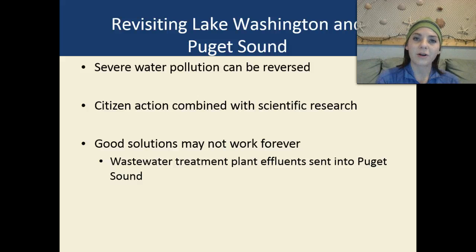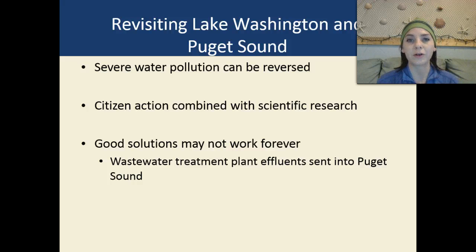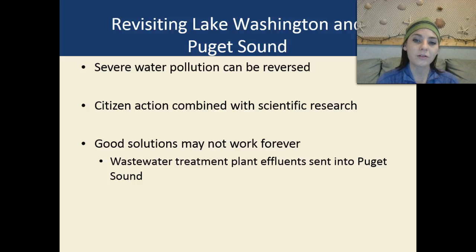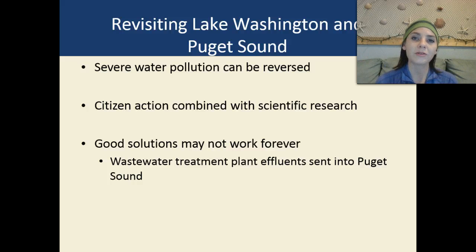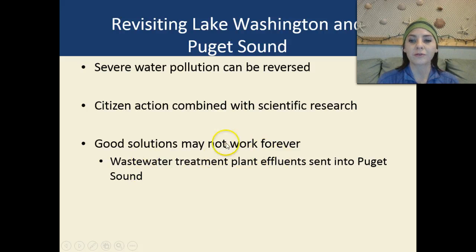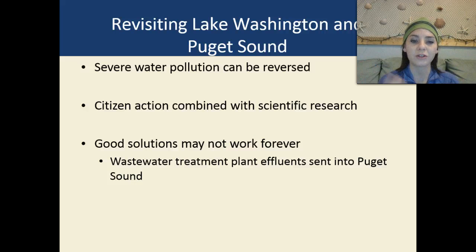Going back to our case study of Lake Washington and Puget Sound — we had severe water pollution, and we did realize it could be reversed. Citizen action combined with scientific research helped decrease pollution in that lake. However, good solutions don't always work forever, as different pollutants keep coming in and require new solutions. Wastewater treatment plant effluents — including nitrates, phosphates, and sewage — were sent to Puget Sound.